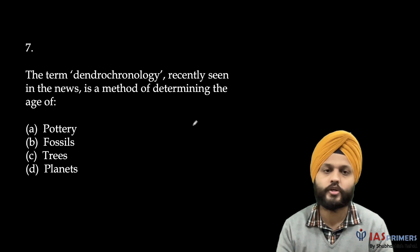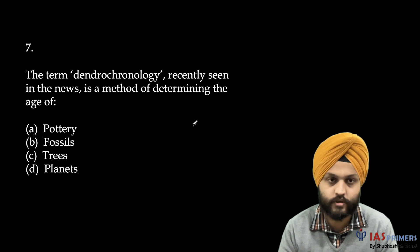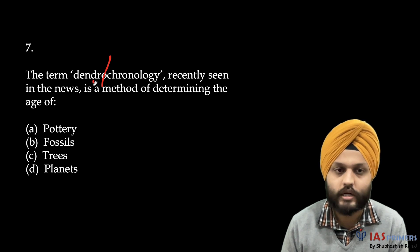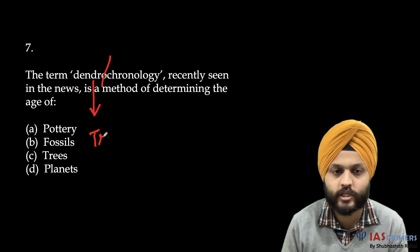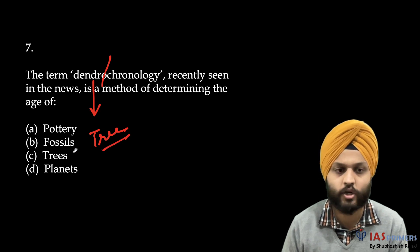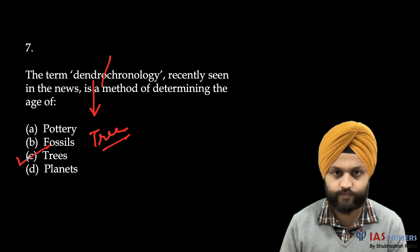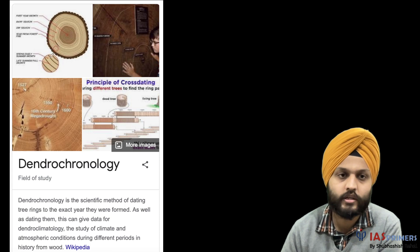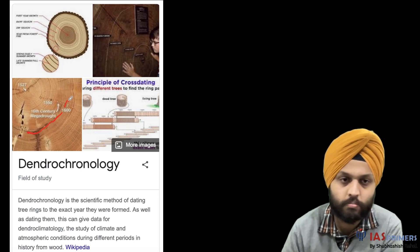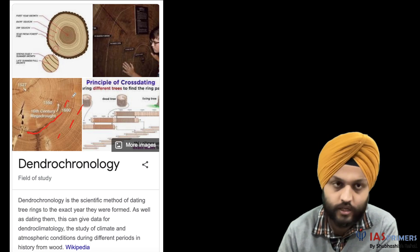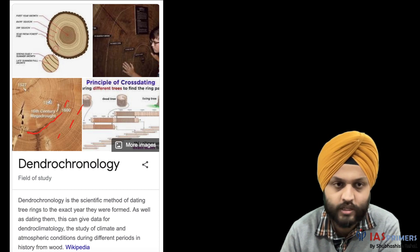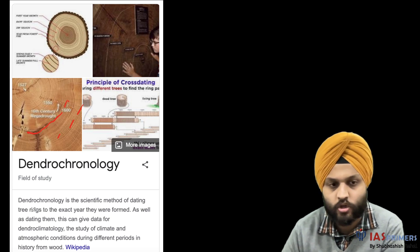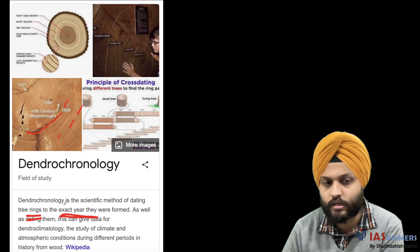Next: the term dendrochronology. 'Dendro' is associated with trees. Dendrochronology is the method of dating tree rings to the exact year they were formed. If you google it, you will find images of tree bark where layers are used to identify the age of the tree, with dating going back to years like 1527, 1550, and 1600.